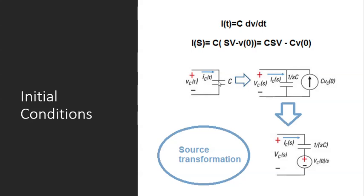But if it has some initial condition V₀ — meaning when V₀ is not zero — then this element is also present in the description of the current in Laplace domain. So I(s) will be Cs·V minus C·V₀⁻.